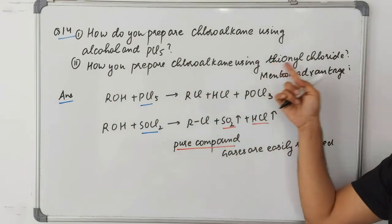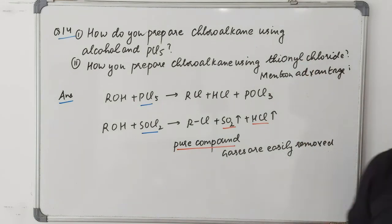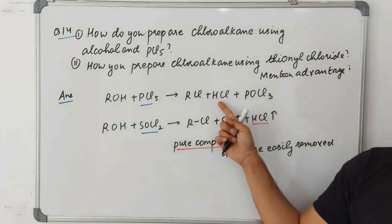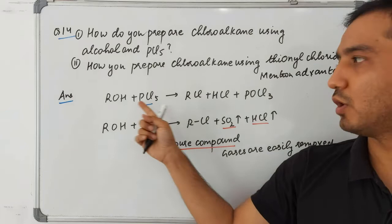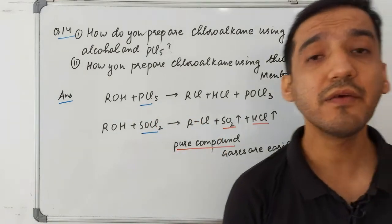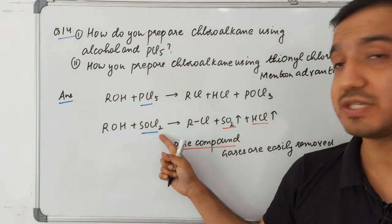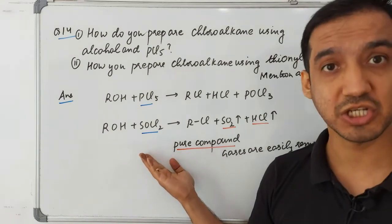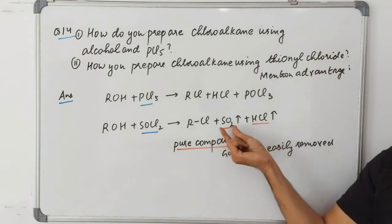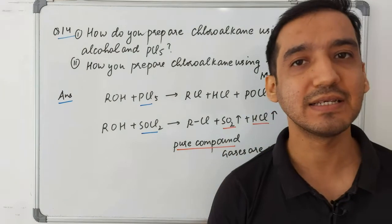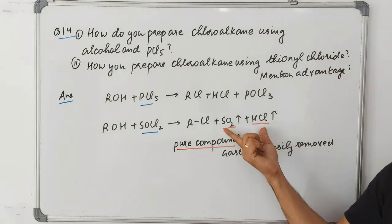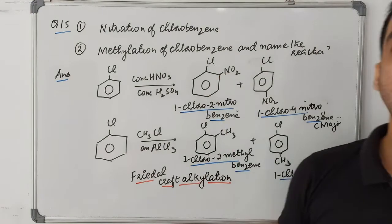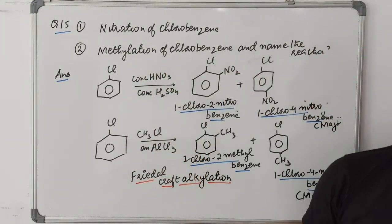Question fourteen: how do you prepare chloroalkane using alcohol and PCl₅? Alcohol reacted with PCl₅ gives RCl, HCl, and POCl₃. Using thionyl chloride (SOCl₂) with alcohol gives RCl, SO₂, and HCl. The advantage of the thionyl chloride method is that the two byproducts are gases (SO₂ and HCl) which can be easily removed, giving pure alkyl chloride.